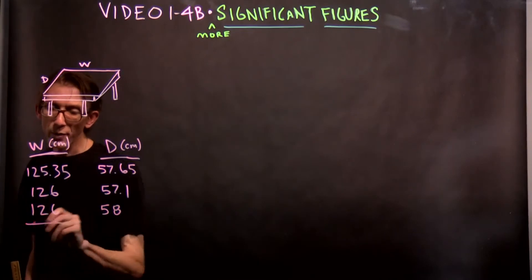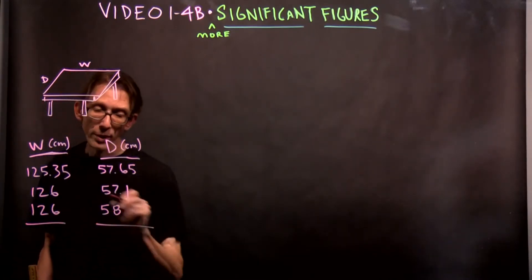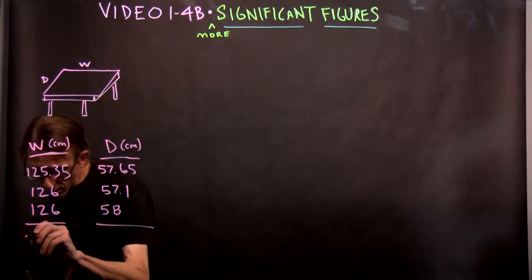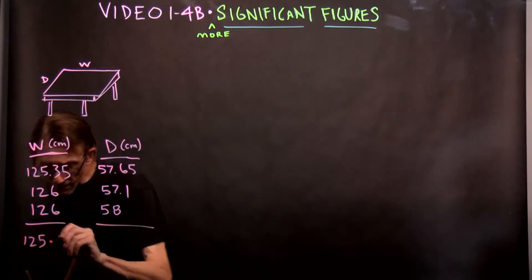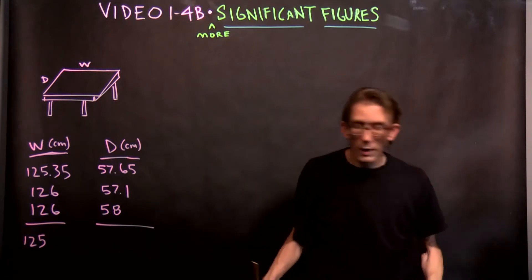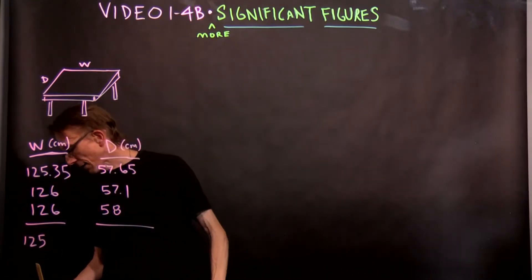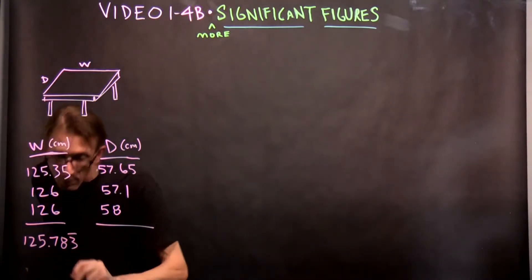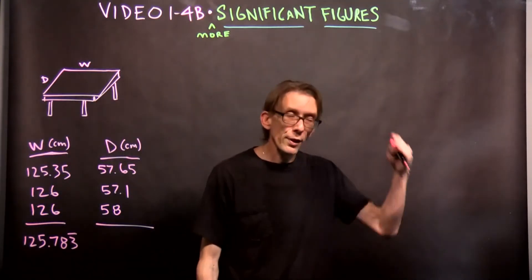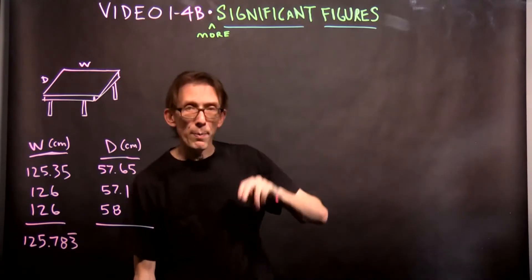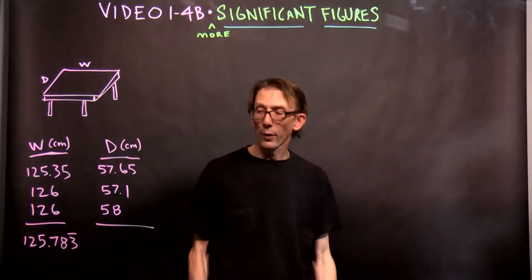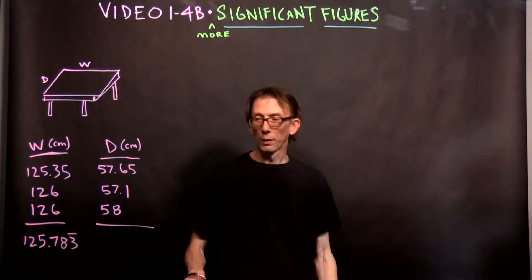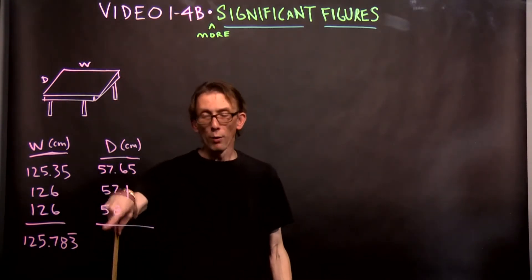So let's do that. Take an average of the three numbers for the width, we take an average of the three numbers for the depth, and we get 125, I think this is showing up well, yes, it's showing up fine. 125.783333333333, all the way past the horizon going on forever. Threes all the way, forever. Repeating, that's what the bar over the three means.